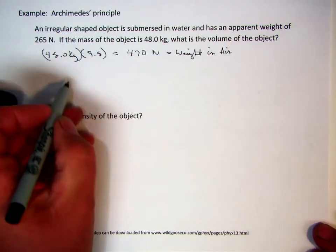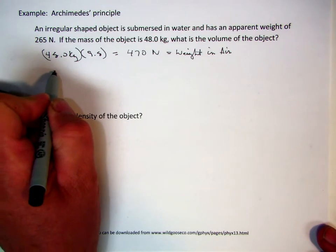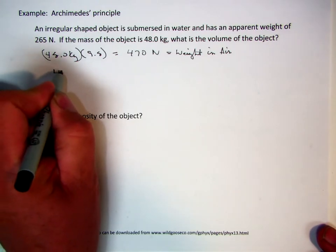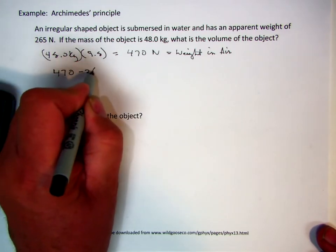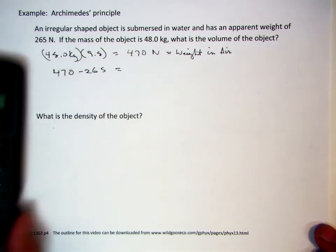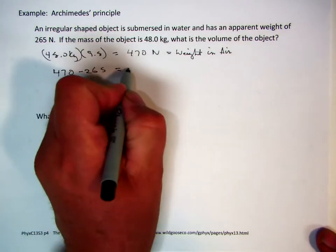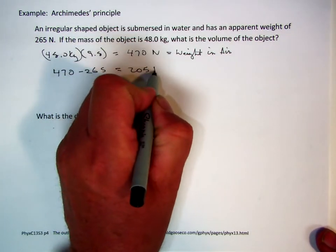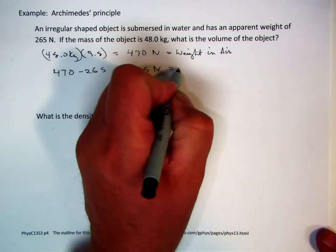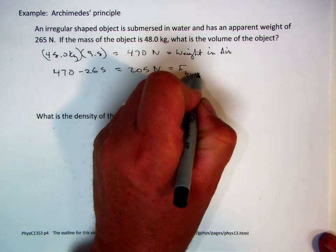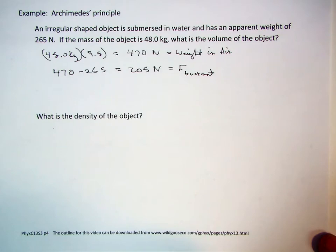Well, if the object weighs 265 Newtons in water, 470 minus 265 is equal to the difference of 205 Newtons. We're going to call that the buoyant force.